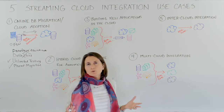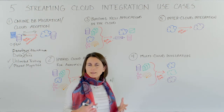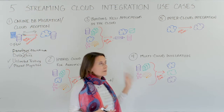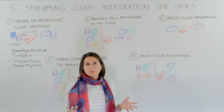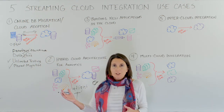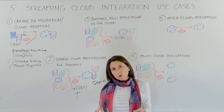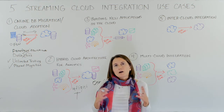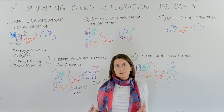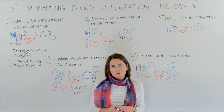Streaming data integration gives you the agility to move your data wherever you want. Cloud can be seamlessly part of your data infrastructure. You can use streaming integration not only to ease migration and adoption of cloud solutions by minimizing risk and business disruption, but also to maintain hybrid cloud and multi-cloud architectures with continuous data flow from your existing data sources. To learn more, please visit our channel for more videos.